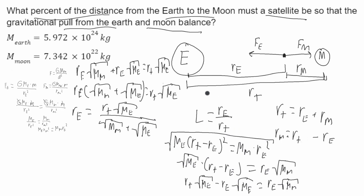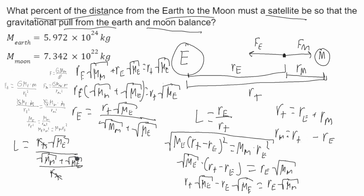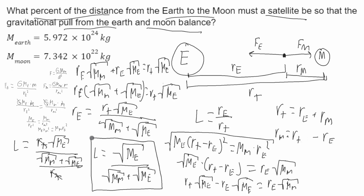Going back to the original equation, L equals RE over RT. Substituting RE and dividing by RT, the RTs cancel, and I get that L equals root ME over (root MM plus root ME). This gives about 0.90-something. When you multiply that by 100, you get about 90%, so that's your final answer.